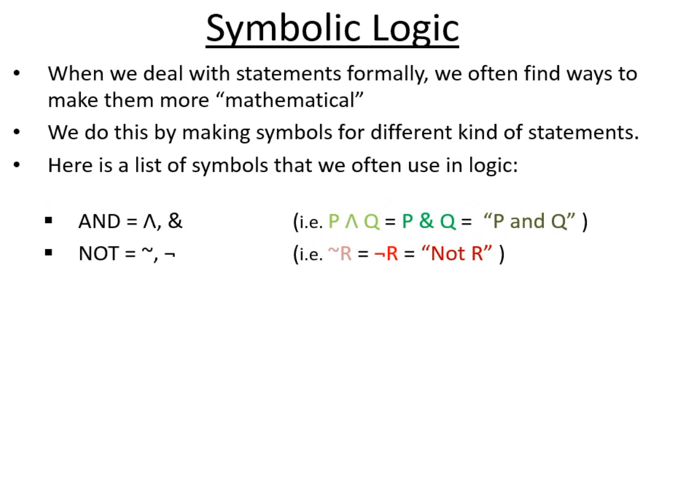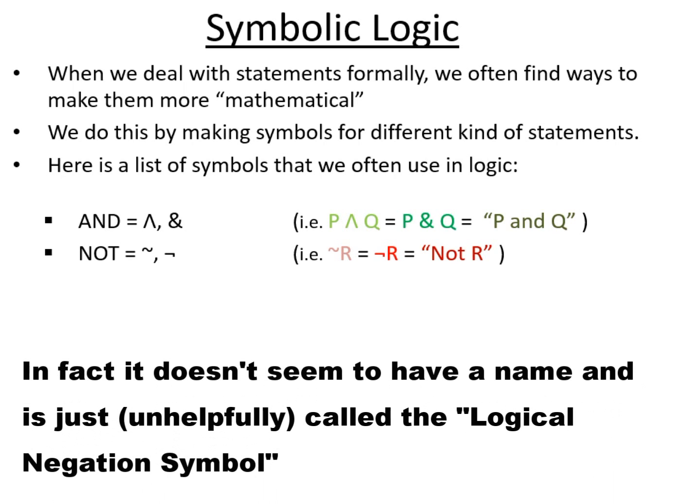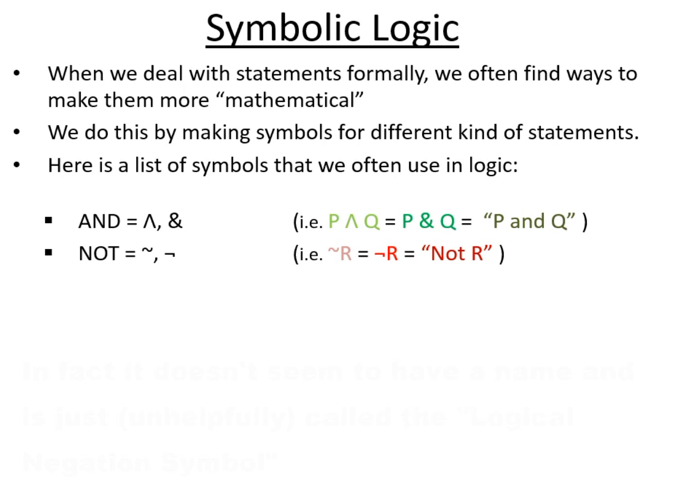NOT or a negation is represented by the tilde symbol, that little wavy line, or alternatively by that strange sort of square hook symbol which I don't know the name for. So tilde R or weird little square hook and R means NOT R, negation of R.